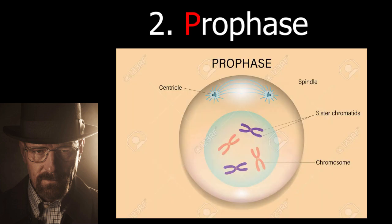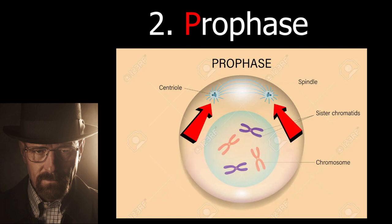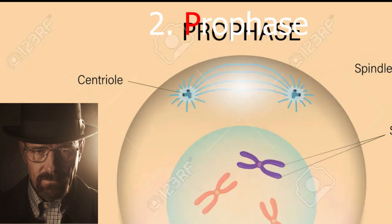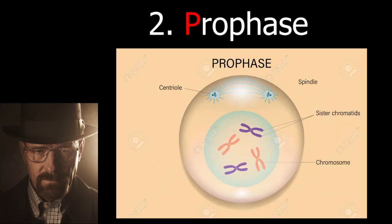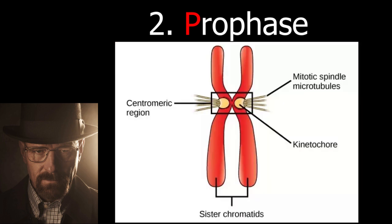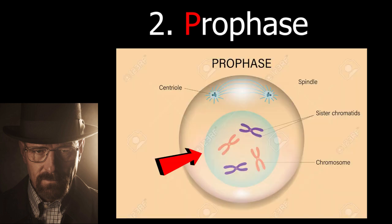Anyway, next is prophase. During prophase, the DNA has condensed and becomes shorter and thicker, turning into chromosomes. The centrioles start to move away from each other to opposite poles of the cell. Little fibers, called spindle fibers, are beginning to form. Nearing the end of prophase, the chromosomes continue to condense. The centrioles reach opposite ends of the cell, and the spindle fibers attach to the centromeres of the chromosomes. Now the nuclear membrane starts to dissolve.